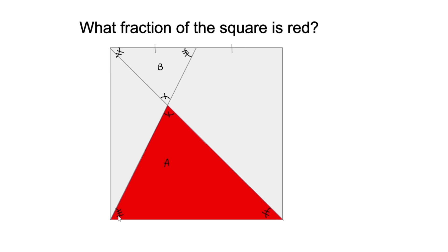So, let this be the side length of our square. From this point on, the two here would be side over two. Since triangle A's base is twice as long as that of triangle B,